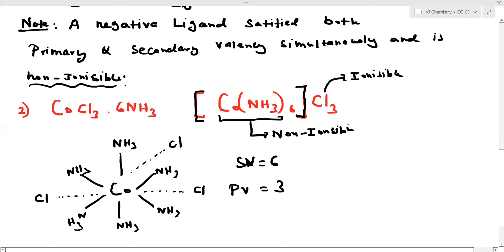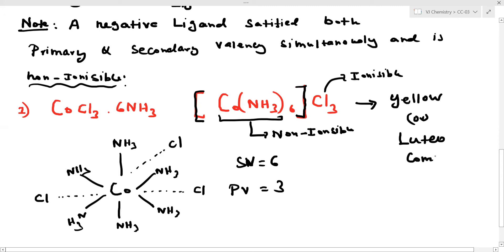This complex is yellow in color and is called the Luteo complex. The secondary valency is 6 and the primary valency is 3. The color of this complex is yellow.